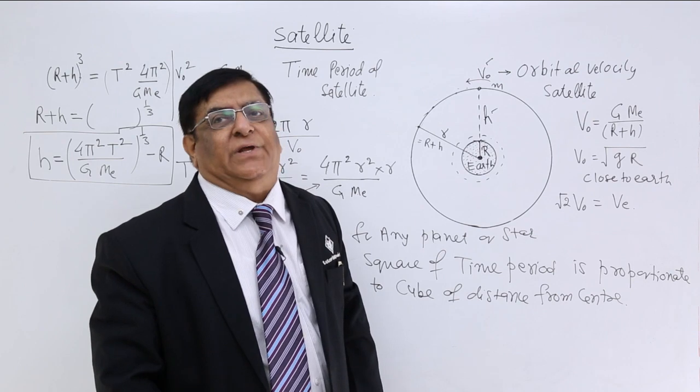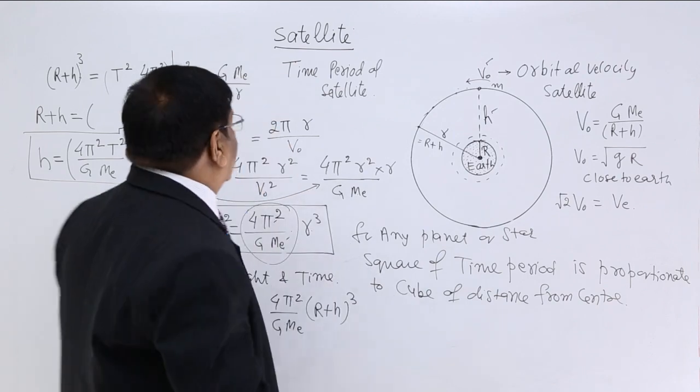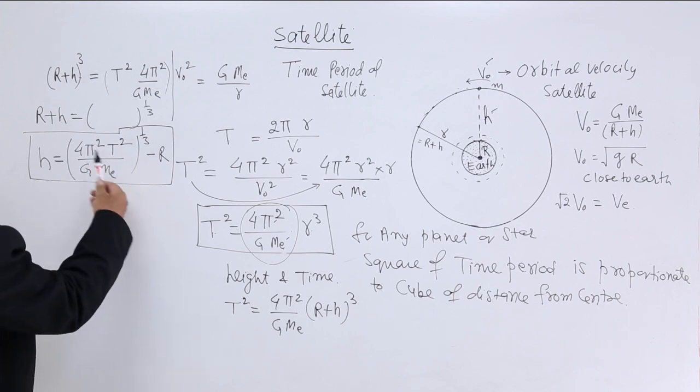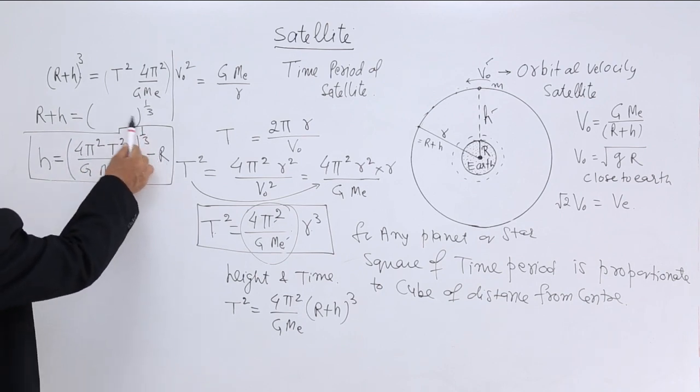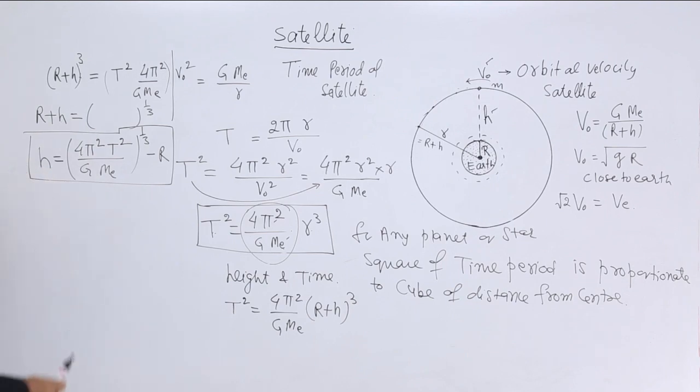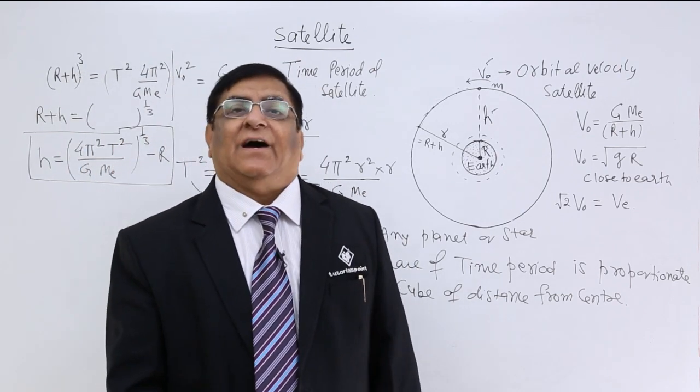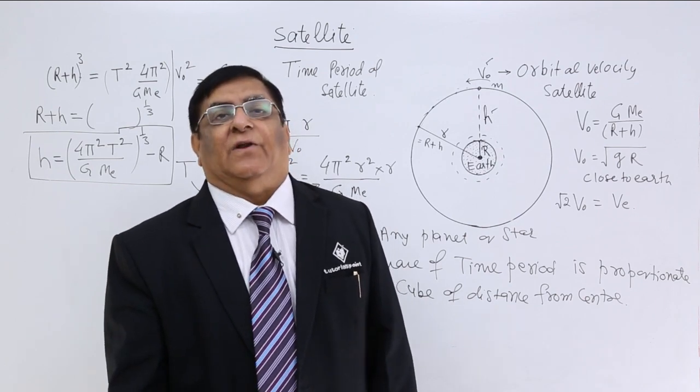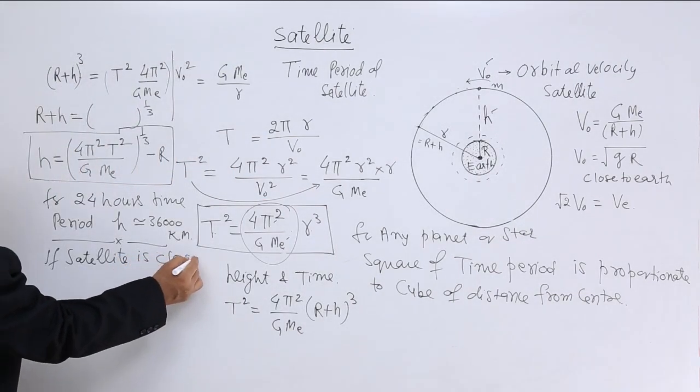Now, suppose, we want a time period equal to 24 hours, exactly, one day time period of the earth. Then, we will place here, at the time, 24 into 30, into 60, into 60, that seconds, and all other things are known to us. If we put this, make the calculation, the height comes to be 36,000 kilometer. That means, if a satellite is at a height of 36,000 kilometer, then its time period will be 24 hours. This is one thing.